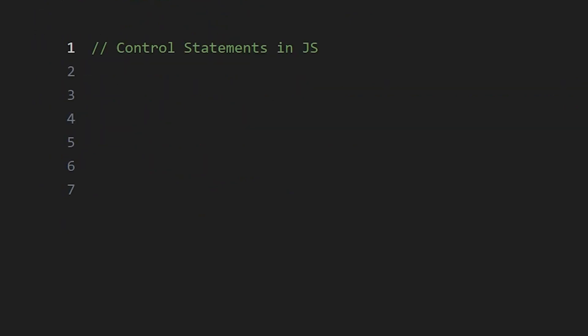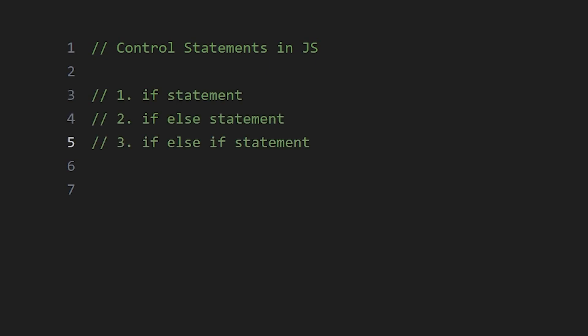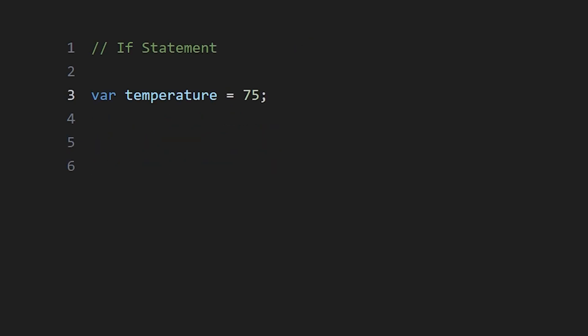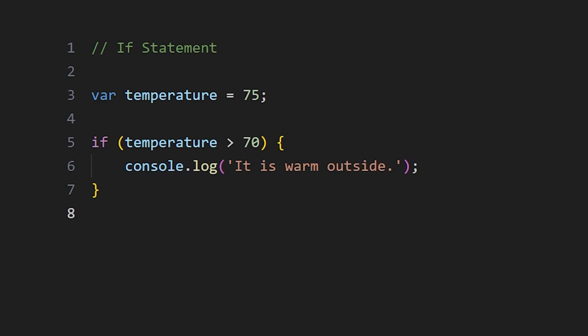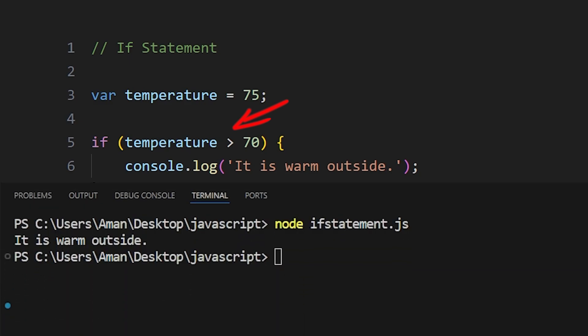Moving on to control statements — there are four common ones in JavaScript: if, if-else, if-else-if, and switch. Writing an if statement is easy: write 'if' and then the condition in parentheses, and the code in curly braces. If the condition is true, the code executes. For example, with temperature set to 75, the condition 'temperature > 70' is true and 'it is warm outside' is printed.